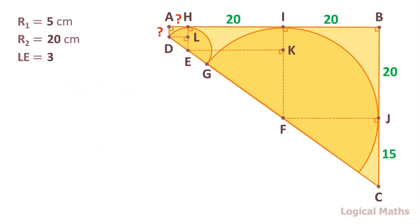In right triangle DEL we know two sides so we can figure out the length of the third side using Pythagorean theorem. DL squared equals to DE squared minus LE squared equals to R1 squared minus 3 squared equals to 5 squared minus 3 squared. And it equals to 4 squared. So DL equals to 4 cm.